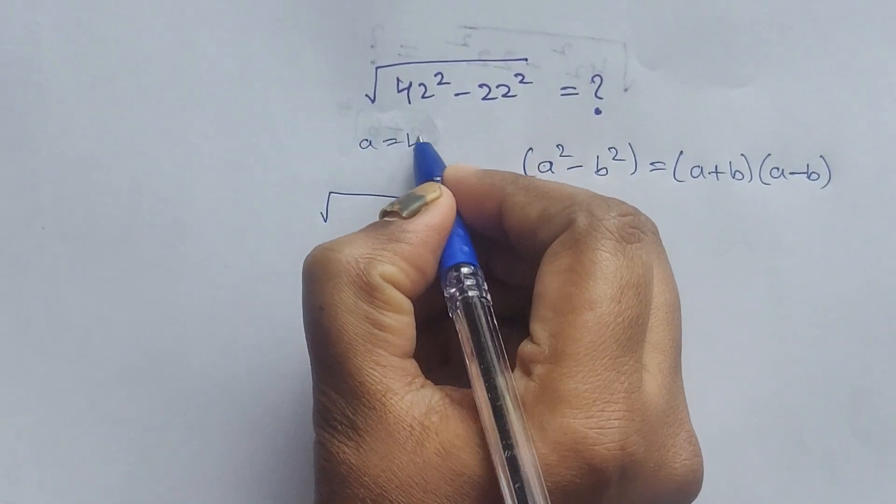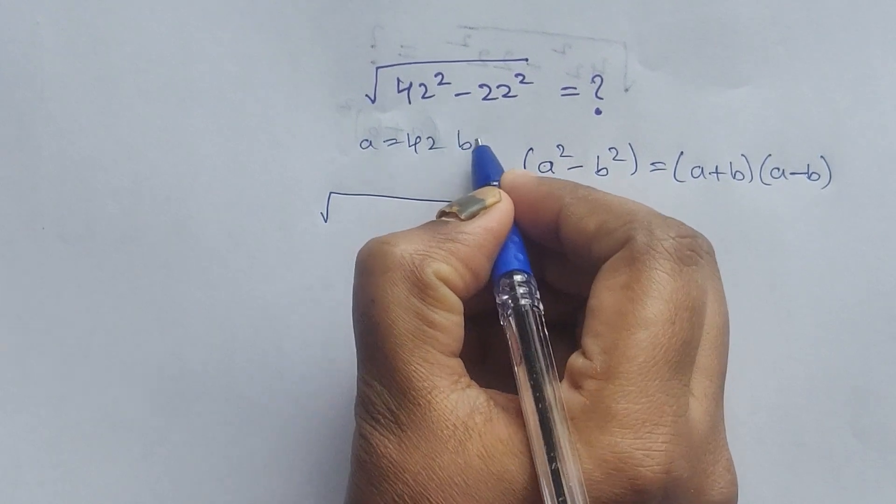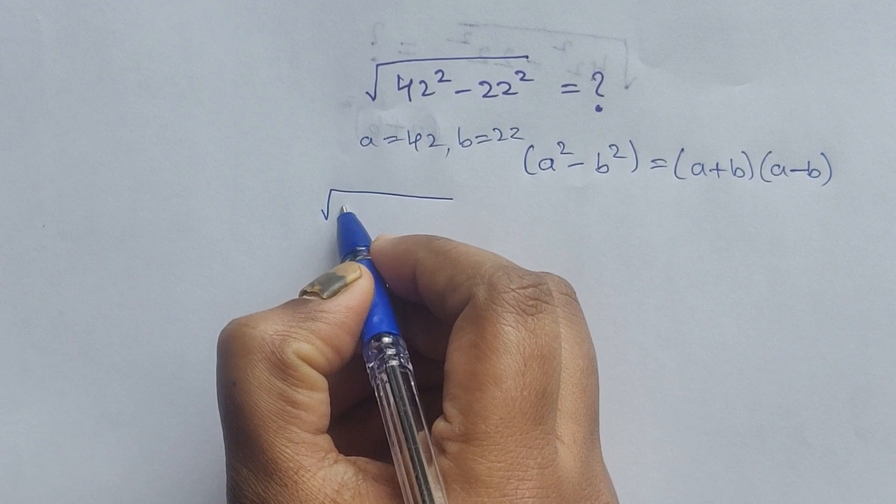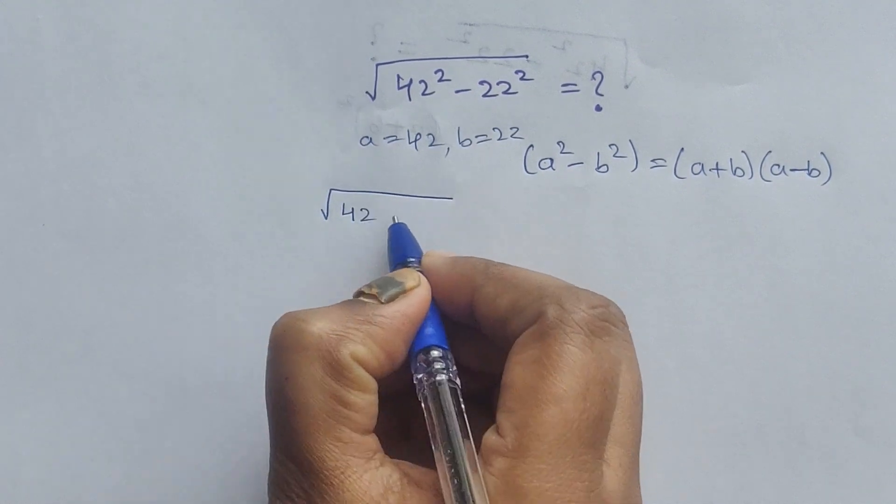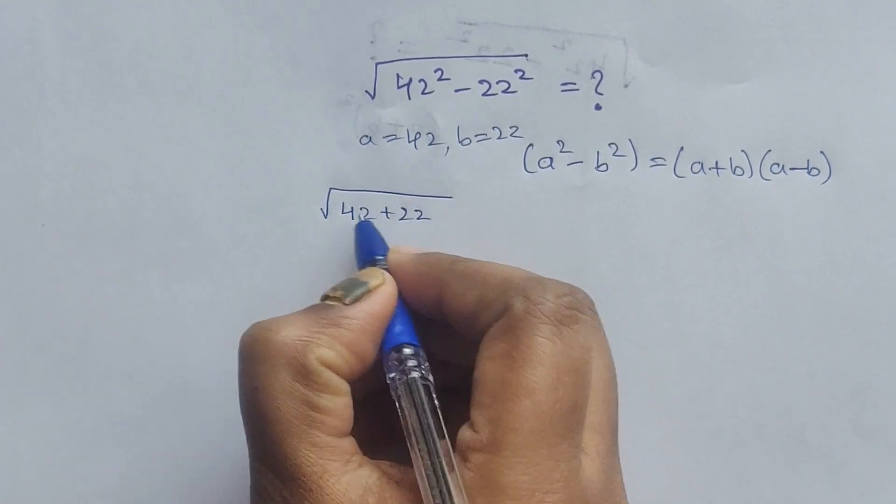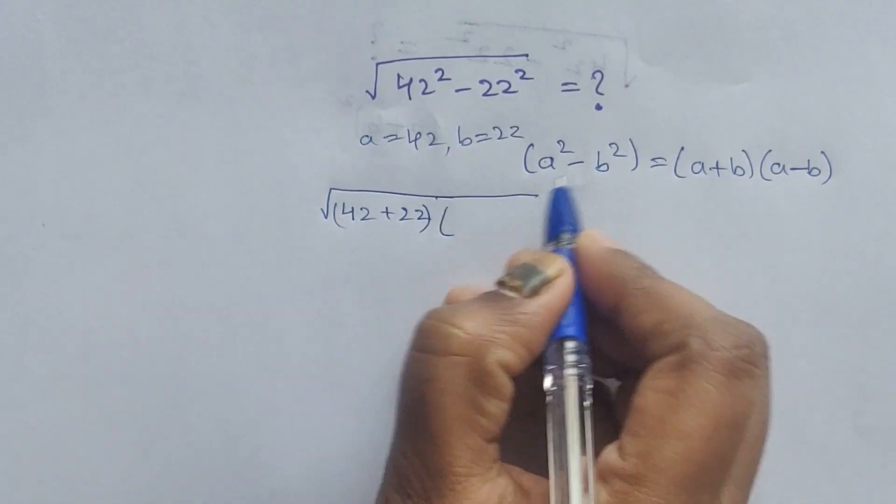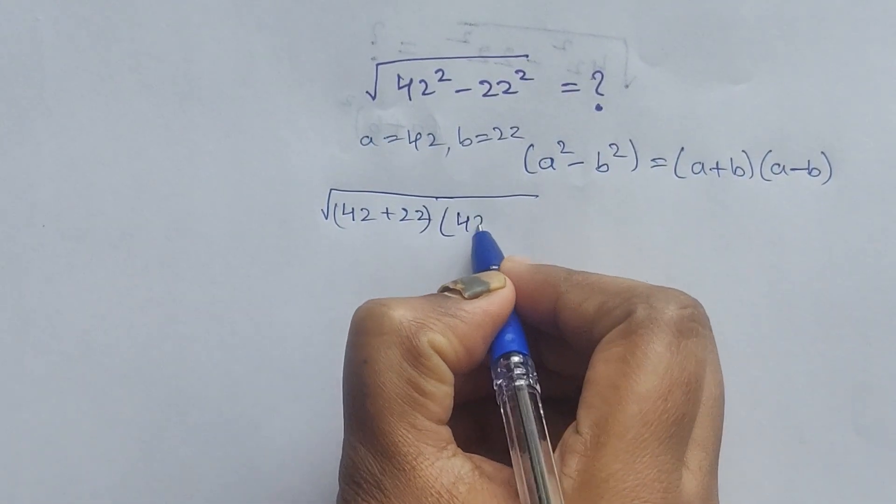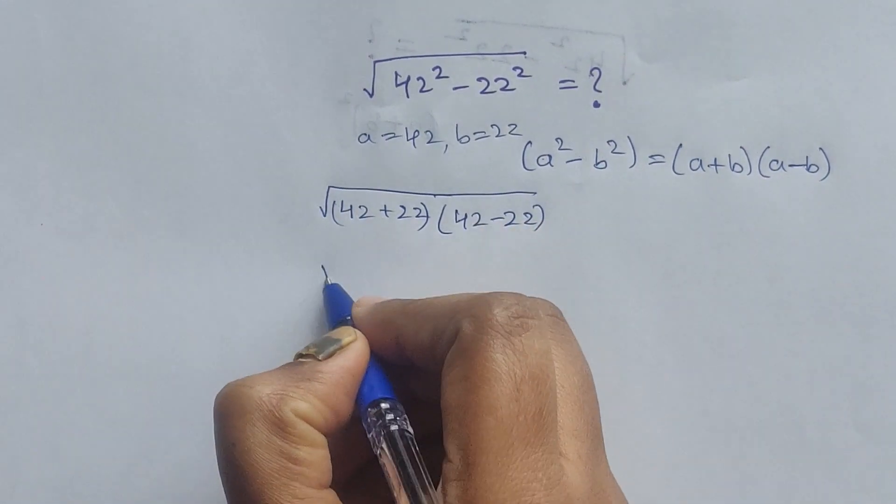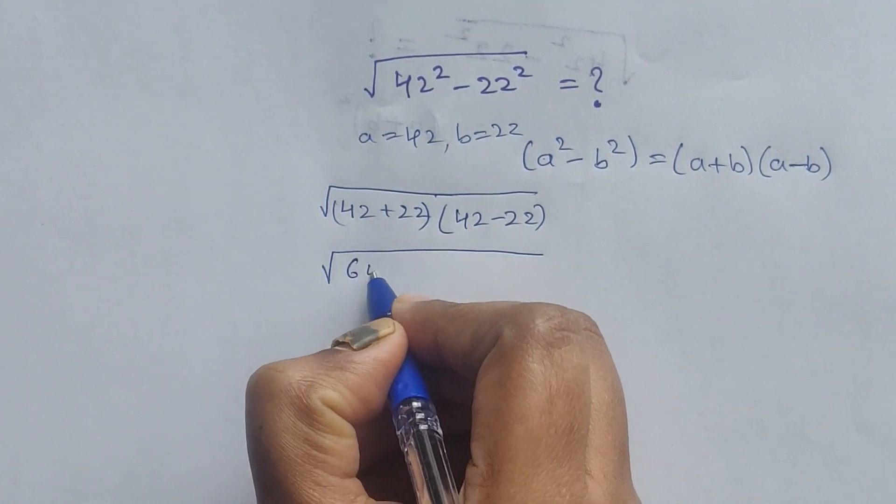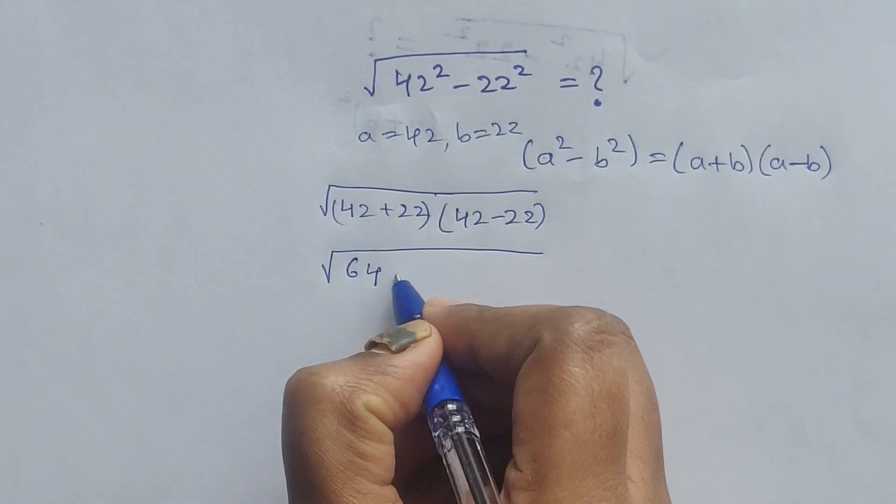Here a equals 42 and b equals 22. So we have 42 plus 22 times 42 minus 22. 42 plus 22 is 64, times 42 minus 22, which is 20.